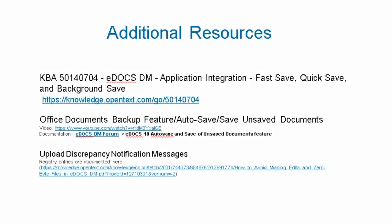For additional resources, you can look up KBA 50140704. This is the eDocs DM application integration fast save, quick save, and background save article. It goes over all the different registry setting options, server registry keys if you're using HTTP, compression on the DM server, and turning that off to increase performance. It also covers the Office Documents Backup feature, autosave, and save of unsaved documents.